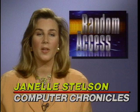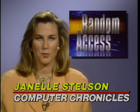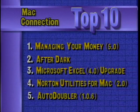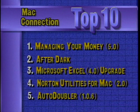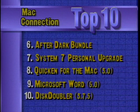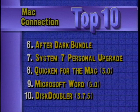In the Random Access File this week — a special summer edition with the Focus on Software. Here are last week's best-selling software titles for the Macintosh according to MacConnection: Managing Your Money is number one, followed by After Dark 2.0, the Excel 4.0 Upgrade, Norton Utilities, and Auto Doubler. Rounding out the top ten are After Dark and the More After Dark Bundle, the System 7 Upgrade, Quicken, the Word 5.0 Upgrade, and Disk Doubler. Next up: Paul Schindler in our summer software review.